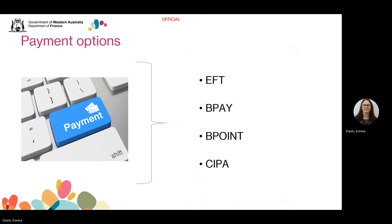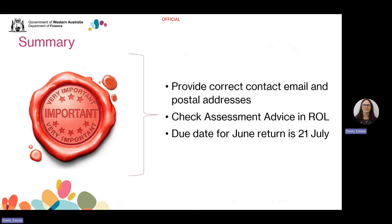Now that we've covered the important information on annual reconciliation, let's have a look at payment options. In WA, payroll tax can be paid via Electronic Funds Transfer, BPAY or BPOINT, or the Revenue Online Client Initiated Payment Account (CIPA), where funds are debited from your nominated account. Please note if you have a credit balance, you can also request a refund via Electronic Funds Transfer (EFT) through Revenue Online using the Refund Request link on the left-hand menu. It's your responsibility to provide us with up-to-date contact details — name, phone number and email address. This year we recommend you provide your postal address as well. Revenue WA will complete the annual reconciliation process in mid-August. Any debit or credit from the annual reconciliation will be issued as an assessment advice after the 7th of September.